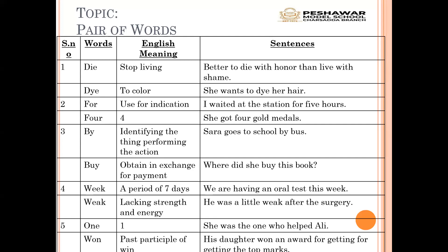The Urdu meaning of 'for' is 'ke liye.' Sentence: 'I want to take this gift for my teacher' — Main apni teacher ke liye gift leke jana chahti hun. For 'four': 'She got four gold medals' — she topped her class four times. Again, there is a full stop at the end. I is capital because it starts the sentence. H in 'hours' is silent.